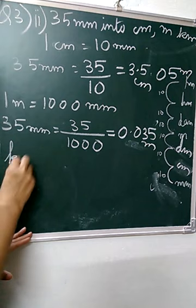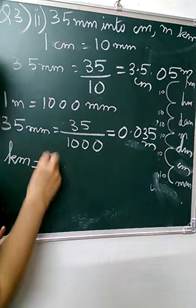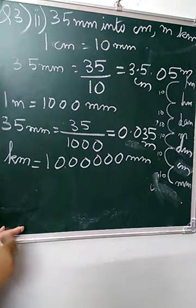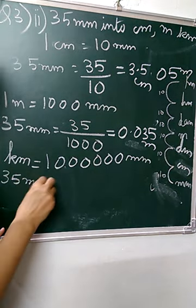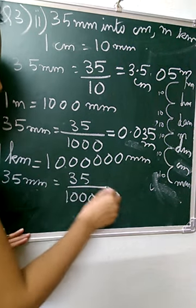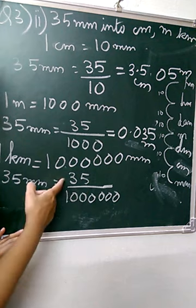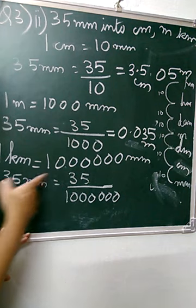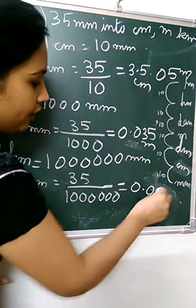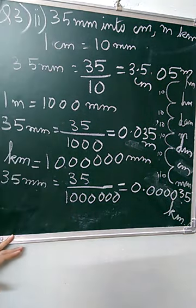Now talking about kilometers and millimeters. We count the number of steps: 1, 2, 3, 4, 5, 6 — so 6 zeros, that is 10 lakhs. So 35 mm will be divided by 10 lakhs. We need 6 decimal places; we have only 2 digits, so we need 4 more zeros. We apply zeros in the beginning: 1, 2, 3, 4 — then 35. So the answer is 0.000035 kilometers. This completes question number 3.